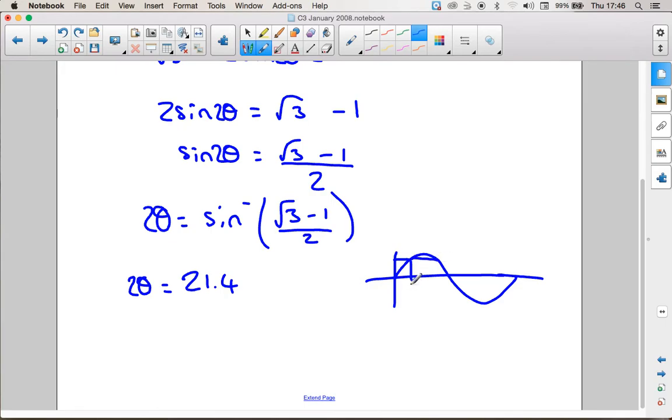So here's my first value of theta, but I will have a second value here. So that will come from doing 180 minus the 21.4, which is 158.5. And therefore theta is 10.7 or 79.3.